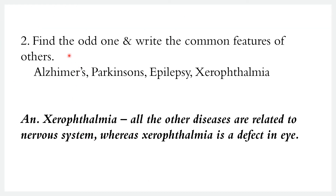Next, find the odd one out and write the common features of the others. The options are: Alzheimer's, Parkinson's, Epilepsy, and Xerophthalmia. Alzheimer's, Parkinson's, and Epilepsy are nervous system disorders.